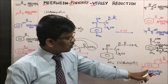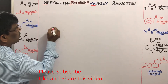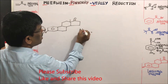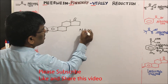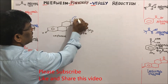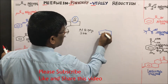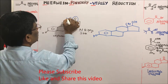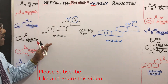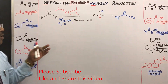Another application: preparation of estradiol from estrone. Estrone is a hormone. MPV reduction using aluminum isopropoxide in isopropyl alcohol reduces the ketone in estrone to give estradiol. This is one of the important applications of MPV reduction.